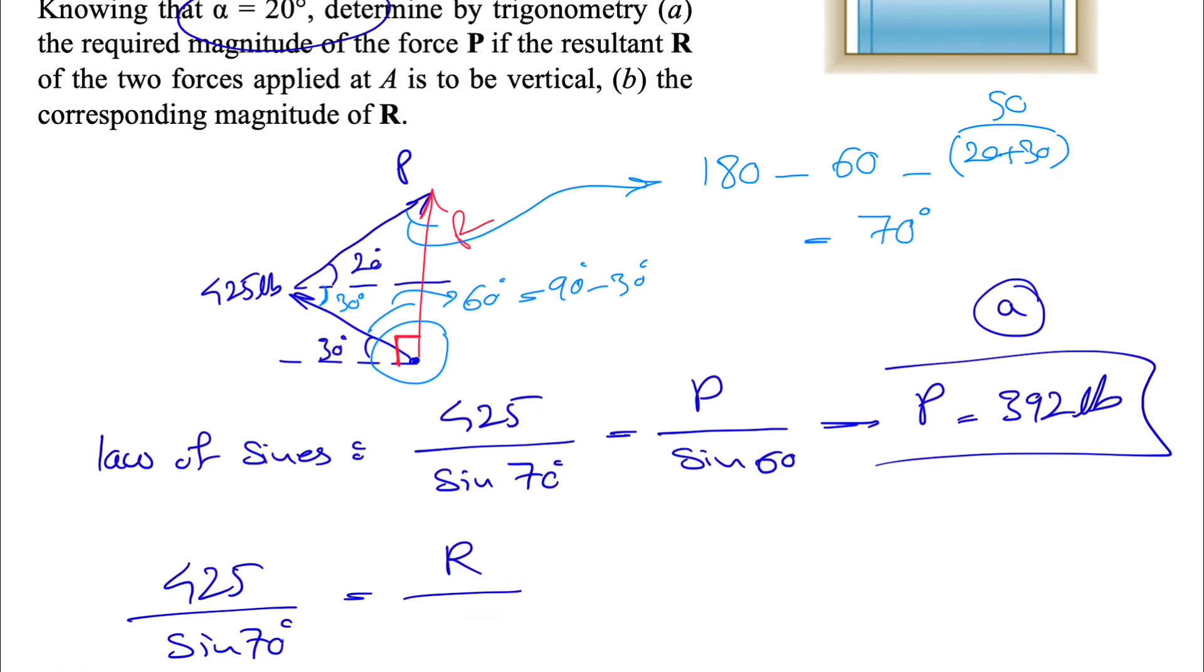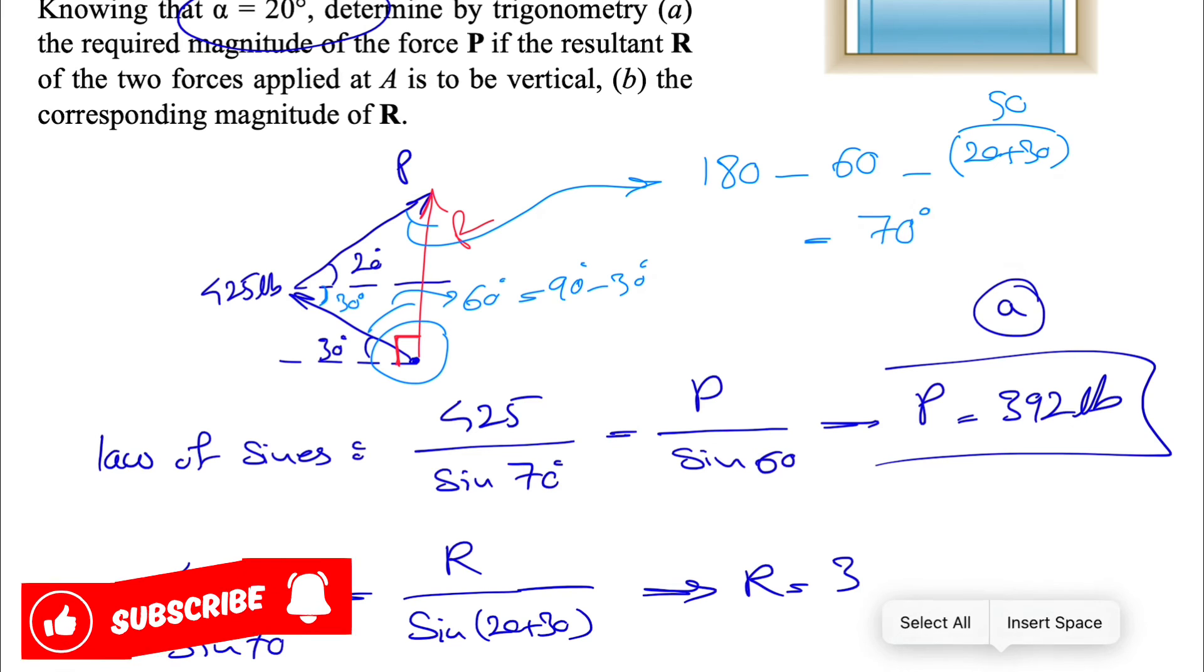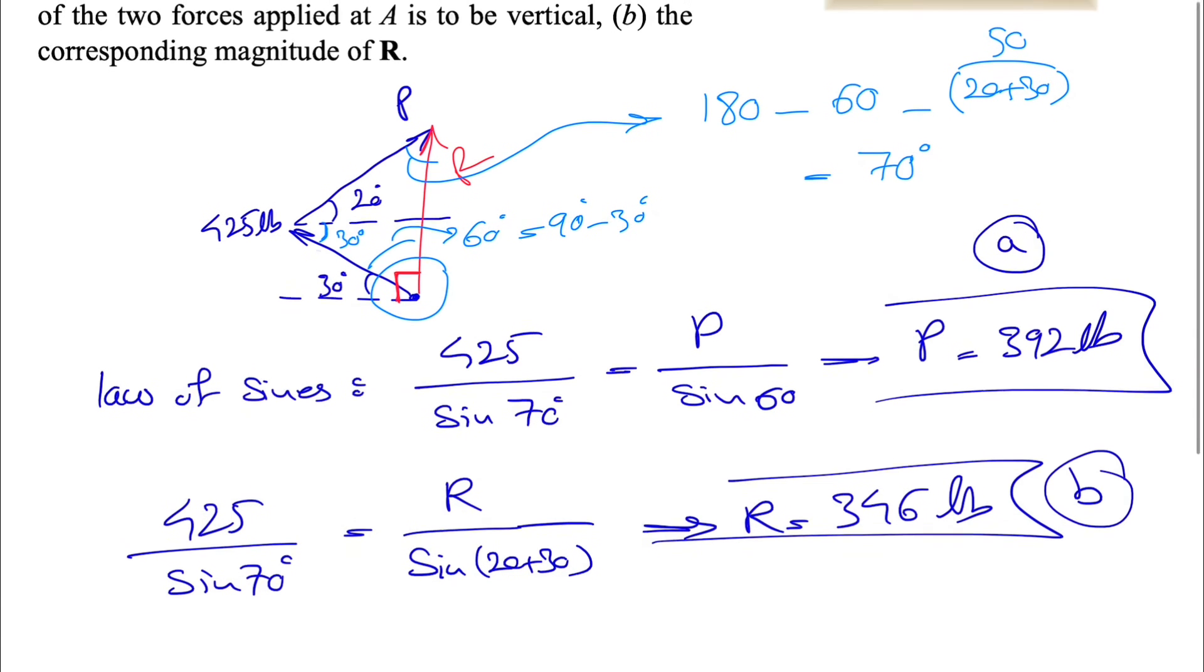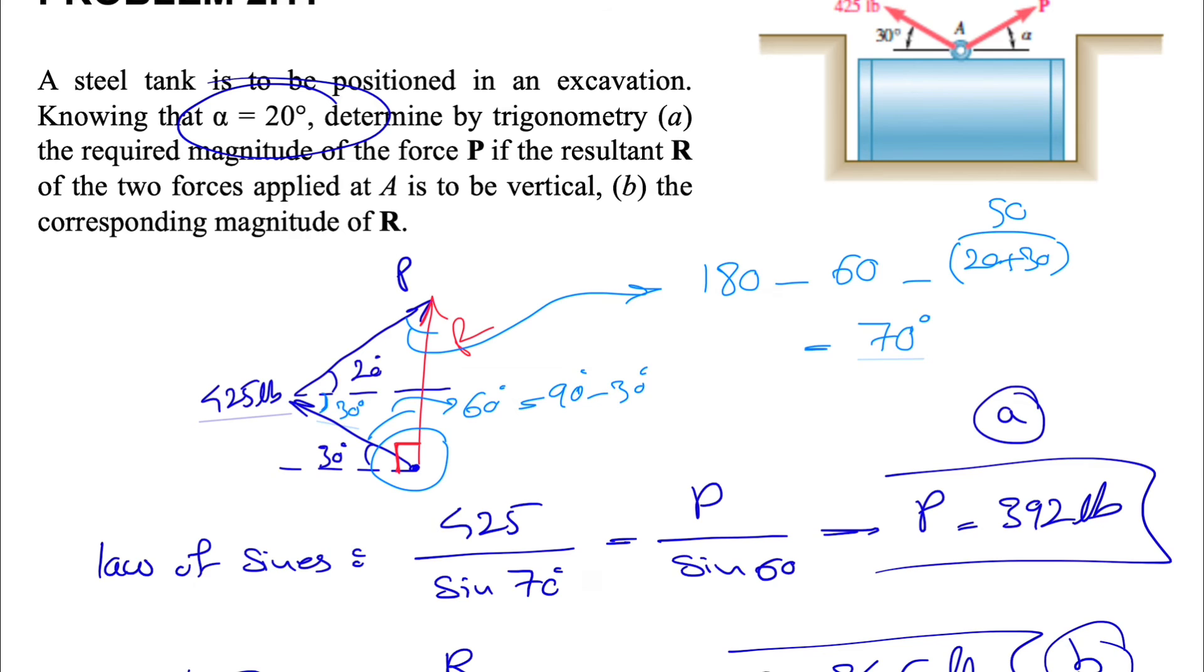For part B we need to find the resultant. We use 425 divided by sine of 70 degrees equals R divided by sine of 50 degrees. The angle for the resultant is 20 plus 30, which is 50. From here we can find R, which is 346 pounds. That's the answer for part B.